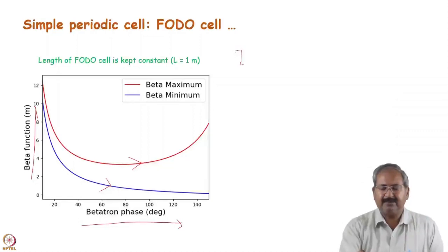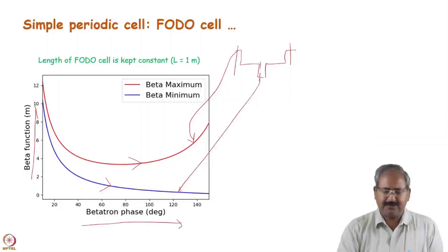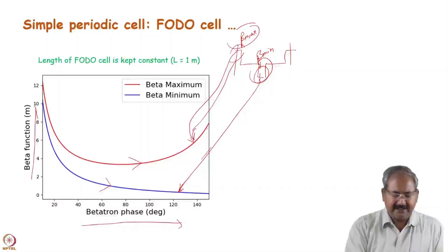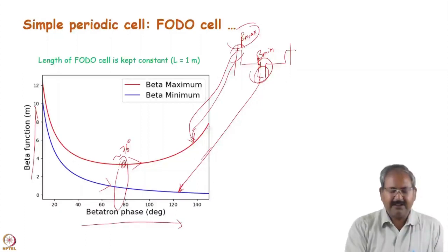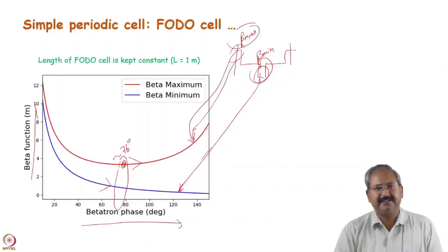If I plot the photocell figure, the red curve shows the beta value at one point and the blue plot shows the beta values at another point. This is beta max. Near 76 degrees — this is nearly 76 degrees — you have a minima in this curve, meaning the minimum value of the beta function occurs if you have 76 degree phase advance in the photocell. So the preferable phase advance for keeping the vacuum chamber aperture minimum is 76 degrees in the case of the photocell.